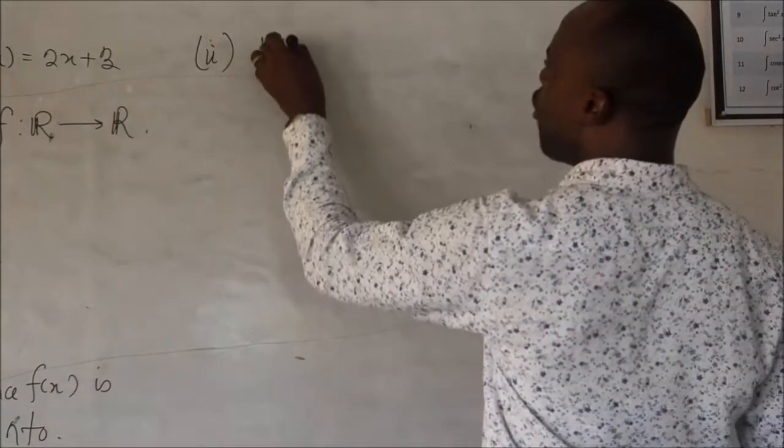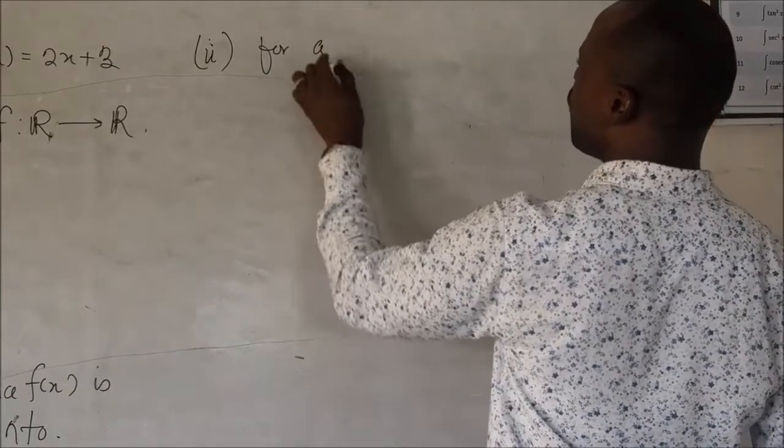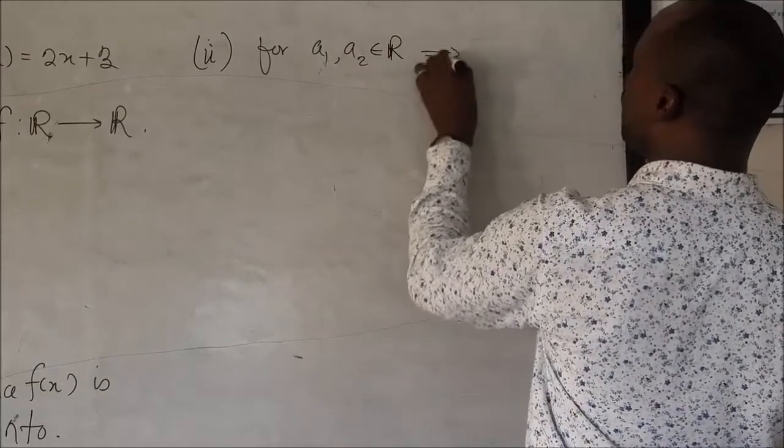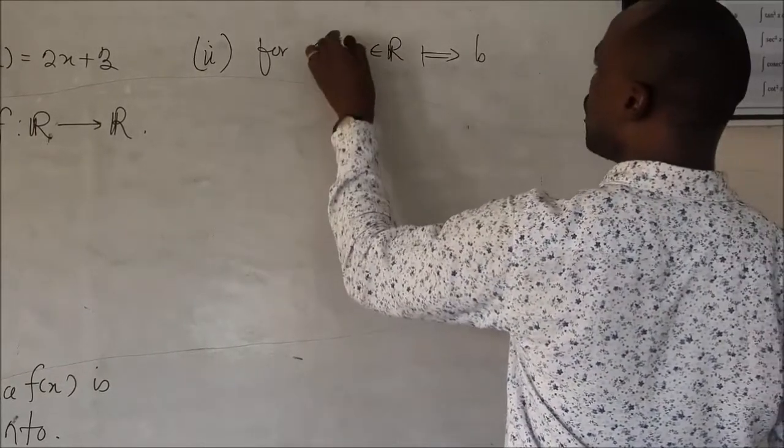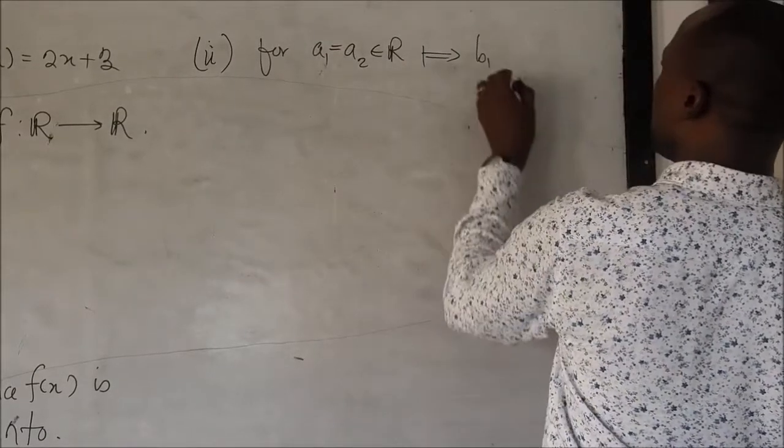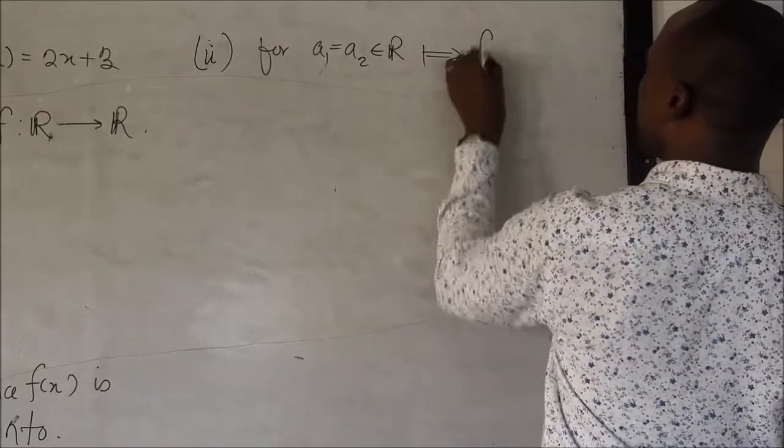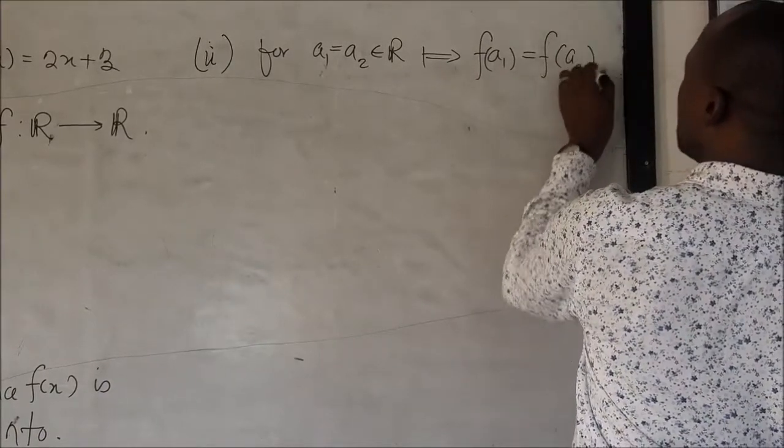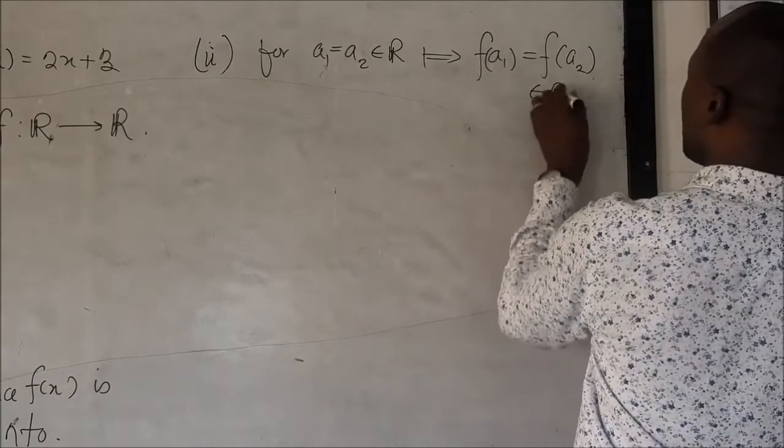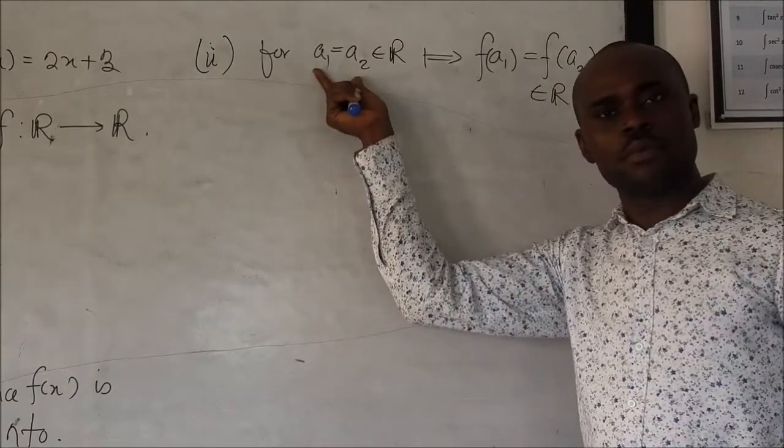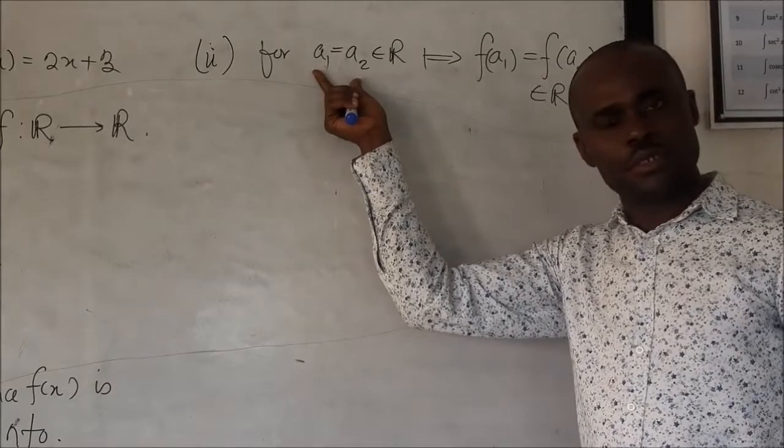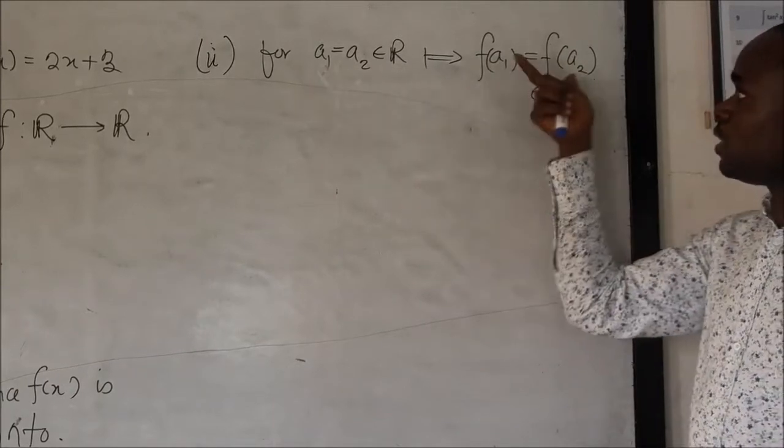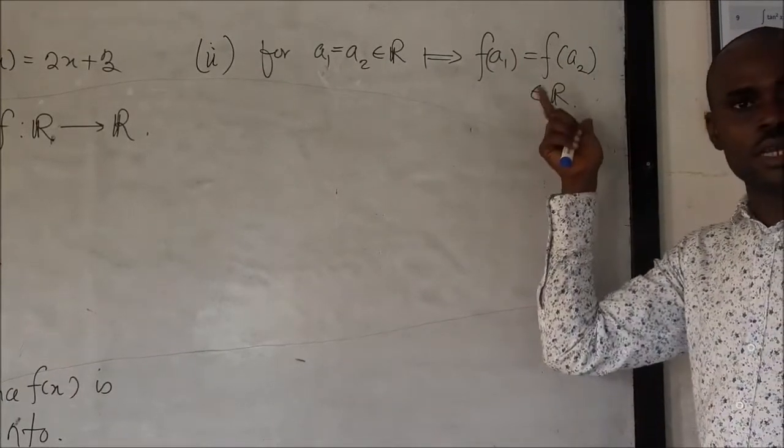It shows that for all a1, a2 in R, it follows that a1 equals to a2. It shows that there is F of a1 equals to F of a2 in R. So, let me explain this for two same image. There will also be the same domain. There will also be the same image in the co-domain.